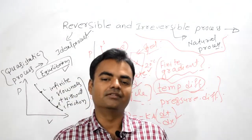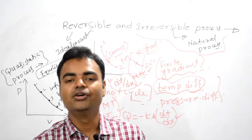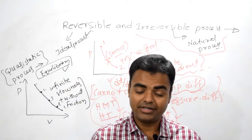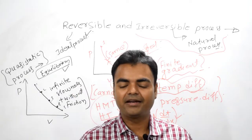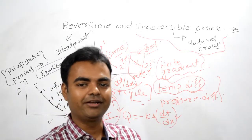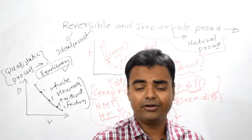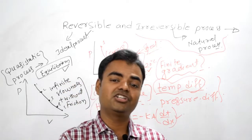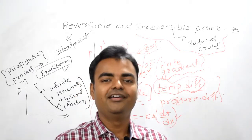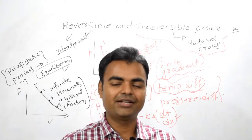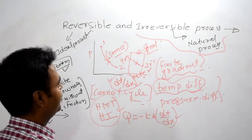There is one key difference between heat and mass transfer (HMT) and thermodynamics: in thermodynamics we do not consider time, so units are in joules. In HMT we do consider time, so units are joules per second. Both measure work done, but the time dimension differs.